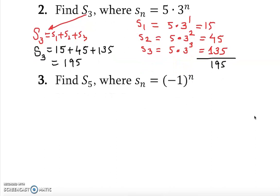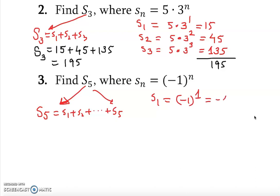Let's look at this next one: find S₅. Series 5 means s₁ + s₂ + s₃ + s₄ + s₅. The sequence here is sₙ = (−1)ⁿ. So s₁ = (−1)¹ = −1 (odd exponent), s₂ = (−1)² = 1, and s₃ = (−1)³ = −1.